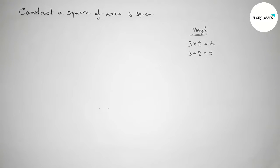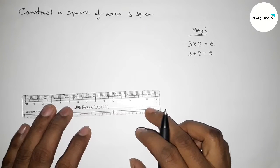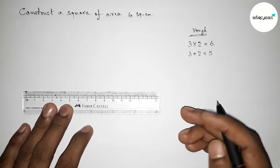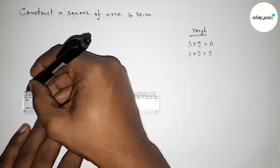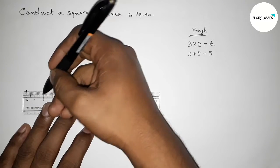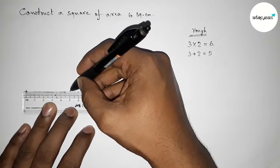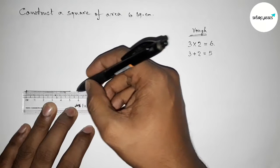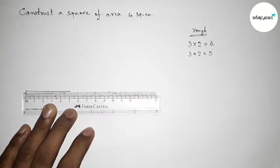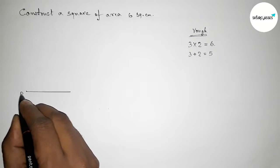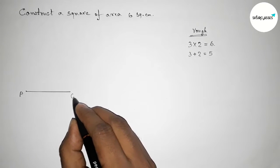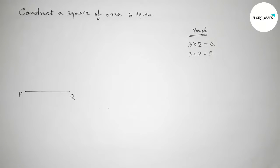Now I'm going to draw a line segment of length 5 centimeters. This is a 5 centimeter line segment, taking points P and Q.